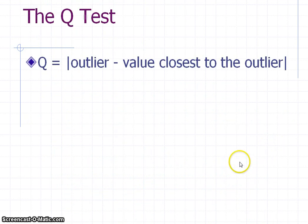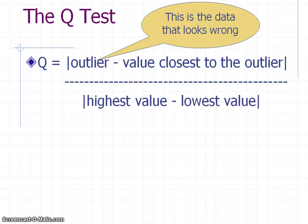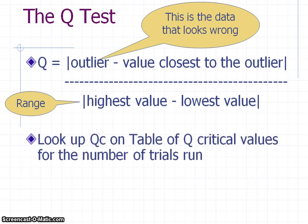Here's the way it works — here's the formula. The outlier refers to the data point in question, the data point that looks wrong. From that you subtract the value closest to it. Then that is divided by essentially your range, which is your highest value minus your lowest value. When you plug all your values into this formula, you get what's called a Q value. Once you have a Q value, you look it up on a table — called a critical Q value — and that comparison tells you whether or not you can throw your results away.